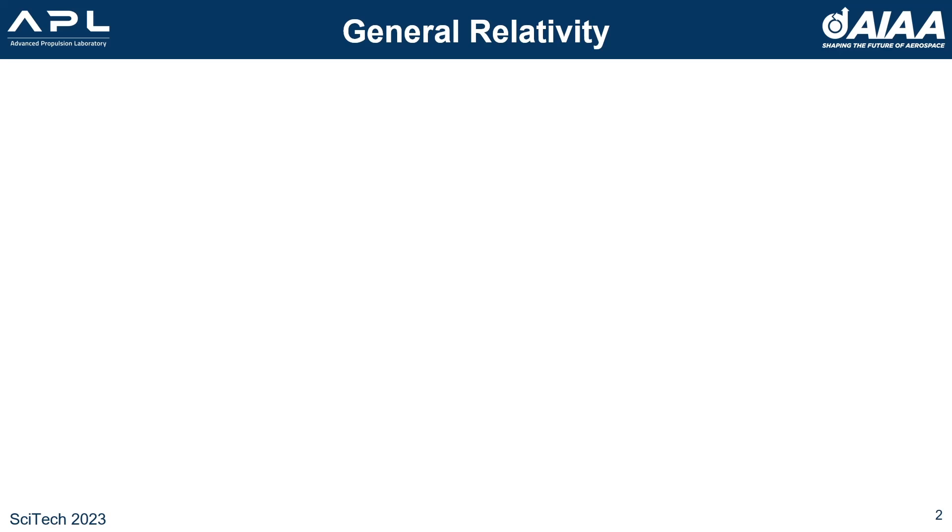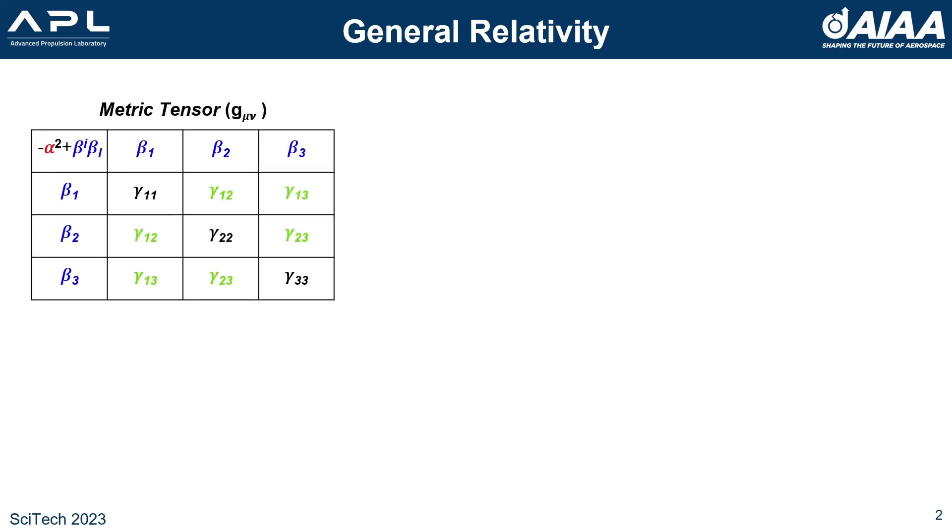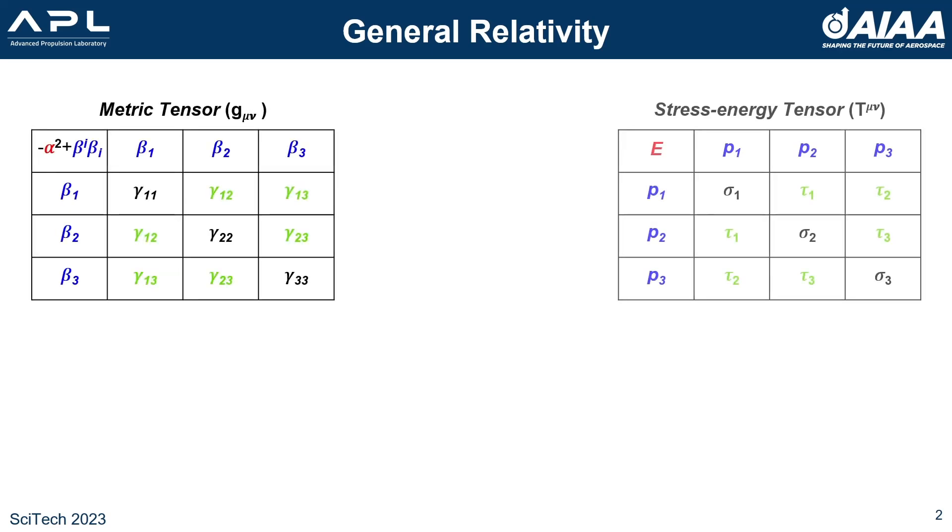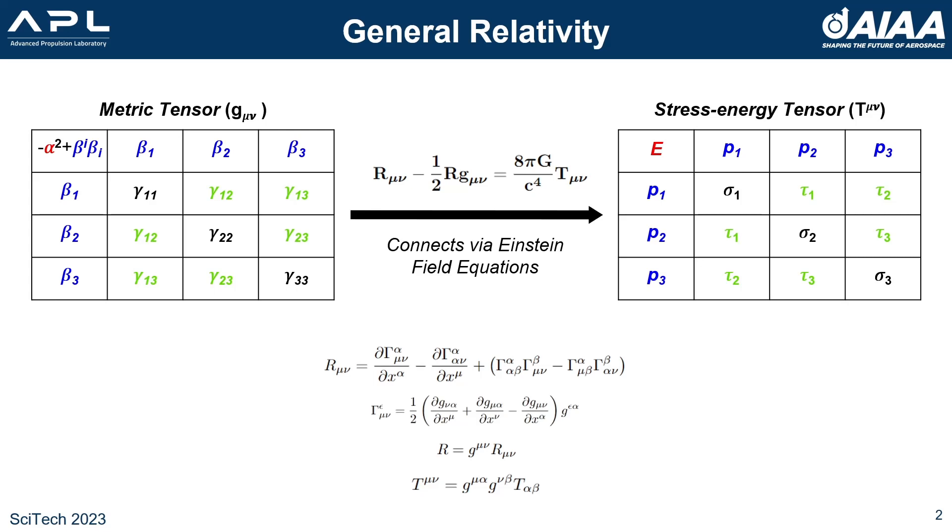At the heart of general relativity is the metric tensor, which describes the curvature of space and time, and the stress energy tensor, which describes the energy needed to create that curvature. The metric tensor is shown as a 4x4 symmetric matrix built from different functions including the lapse rate, which describes the passage of time, the shift vector, which describes the relative motion of space, and the spatial and shear terms, which describe how space expands, contracts, and shears.